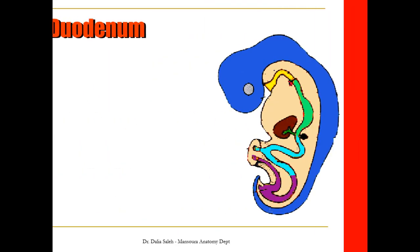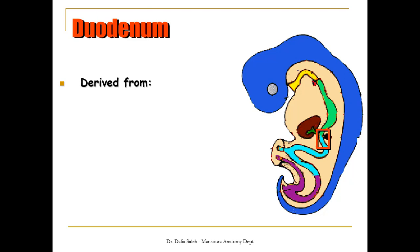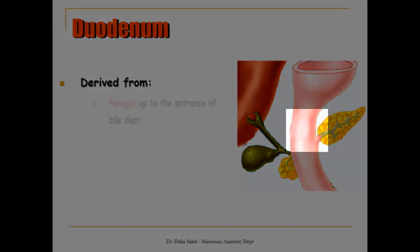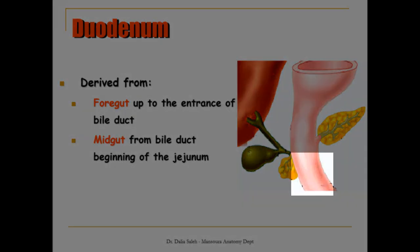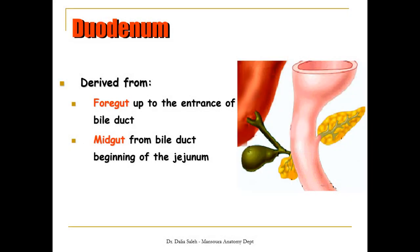To start with the duodenum — in this sagittal section of an embryo, you can notice the developing gastrointestinal tract. The duodenum is derived from this area, which is the lower part of the foregut up to the entrance of the bile duct, and the upper part of the midgut from the bile duct to the beginning of the duodenum.